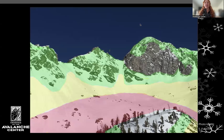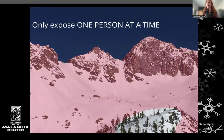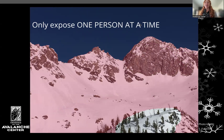As we're traveling through terrain, it looks more like this. There are multiple starting zones, multiple tracks, multiple runout zones. So we have to constantly be reassessing and have good situational awareness as to what we're exposing ourselves to. If we want to make it more black and white, we really only want to expose one person at a time to an avalanche hazard. That's not always realistic, so we just need to understand the consequences of exposing more than one person to a path at a time.